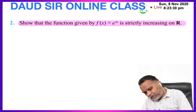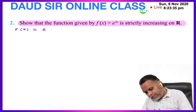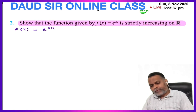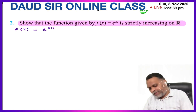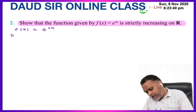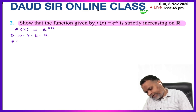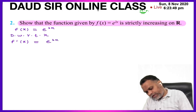We take the function f(x) = e^(2x). Differentiating with respect to x, f'(x) — differentiating e^(2x) gives 2 times e^(2x) by the chain rule.